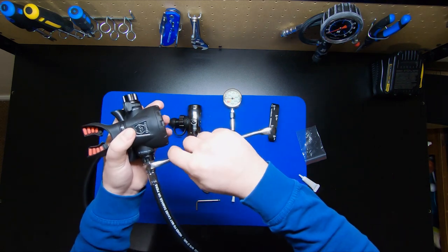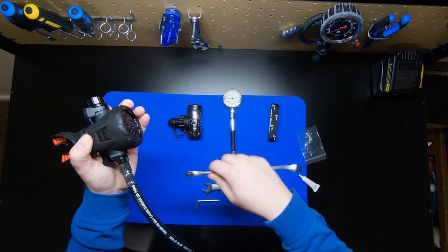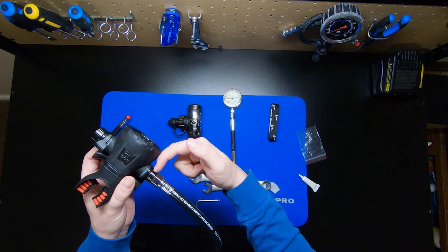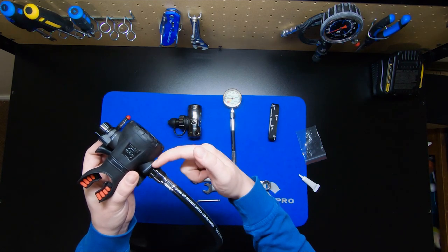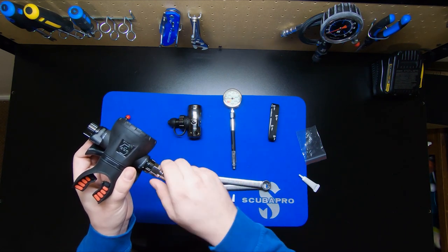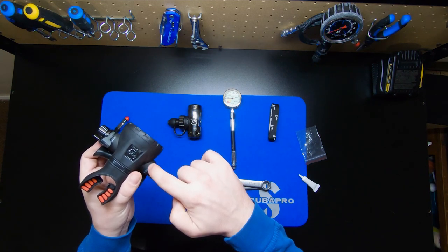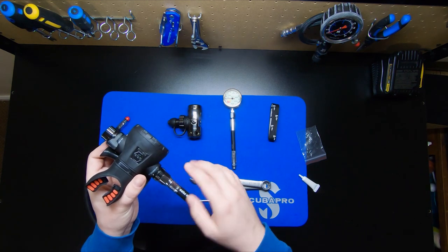Once I have that attached, I'm going to grab this wrench and just gently snug that. Again, this doesn't need to be very tight. You do want to be careful. This is a metal nut going into a plastic body. So if I was to put too much tension on this and tighten it up, I can over tighten this and I can cause a bit of a stress crack to happen in the threads. So just be very careful.